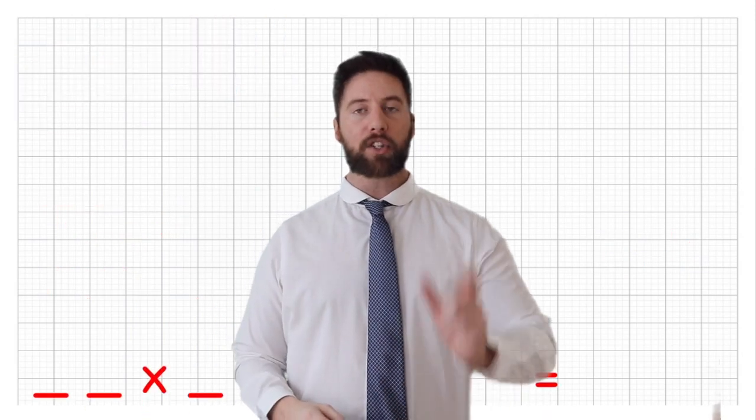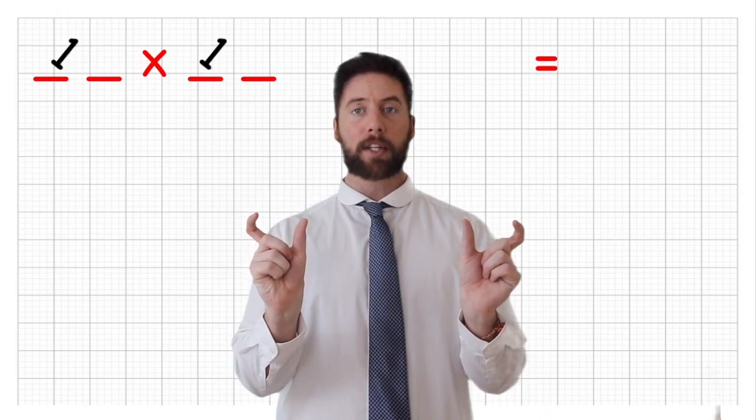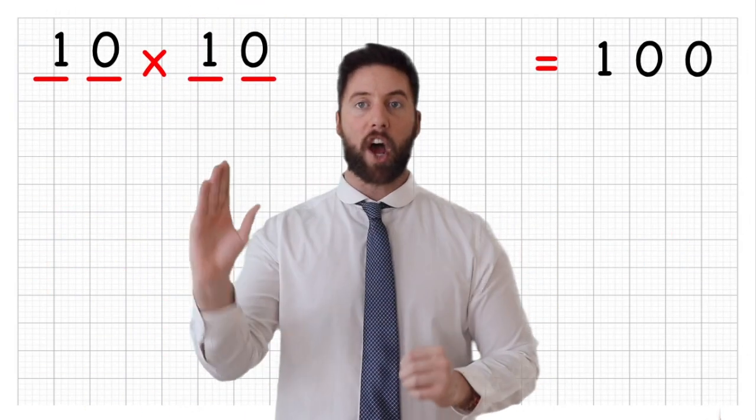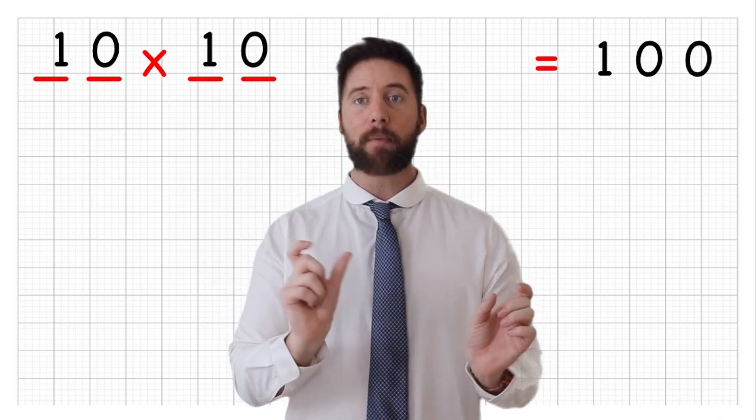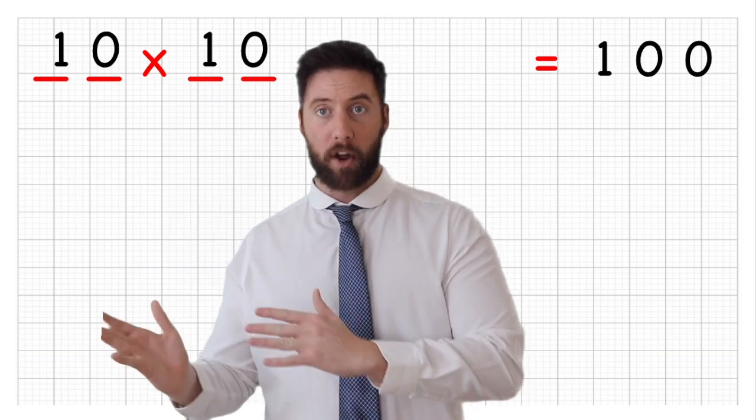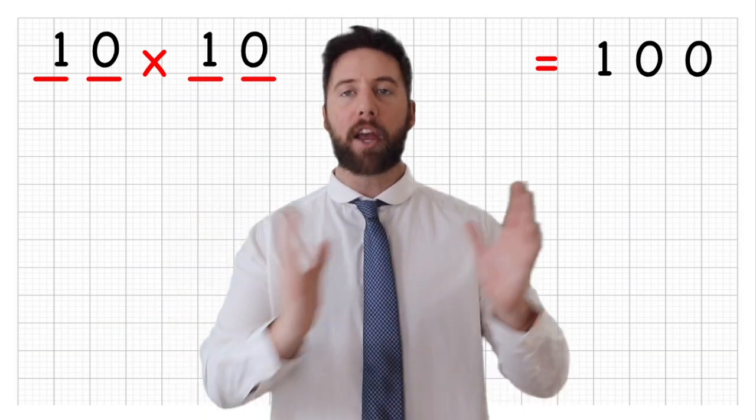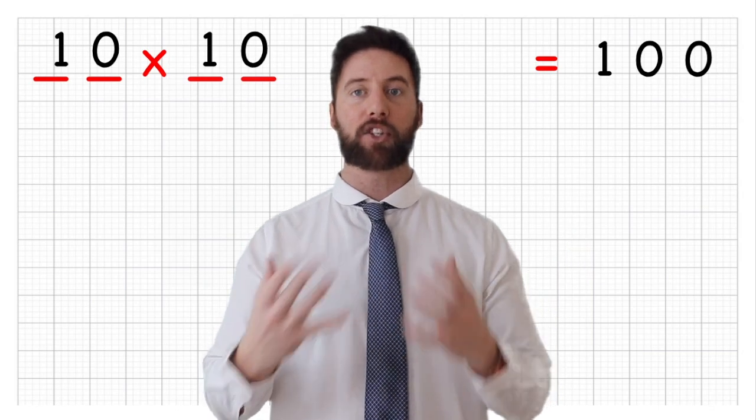But there is a rule. You are only allowed to use two two-digit numbers to multiply together to try and hit my target. So for example, I use a very basic one. If I did 10 times 10, I would get 100. Now I know that's miles away from the answer that I'm looking for, but that's just an example.